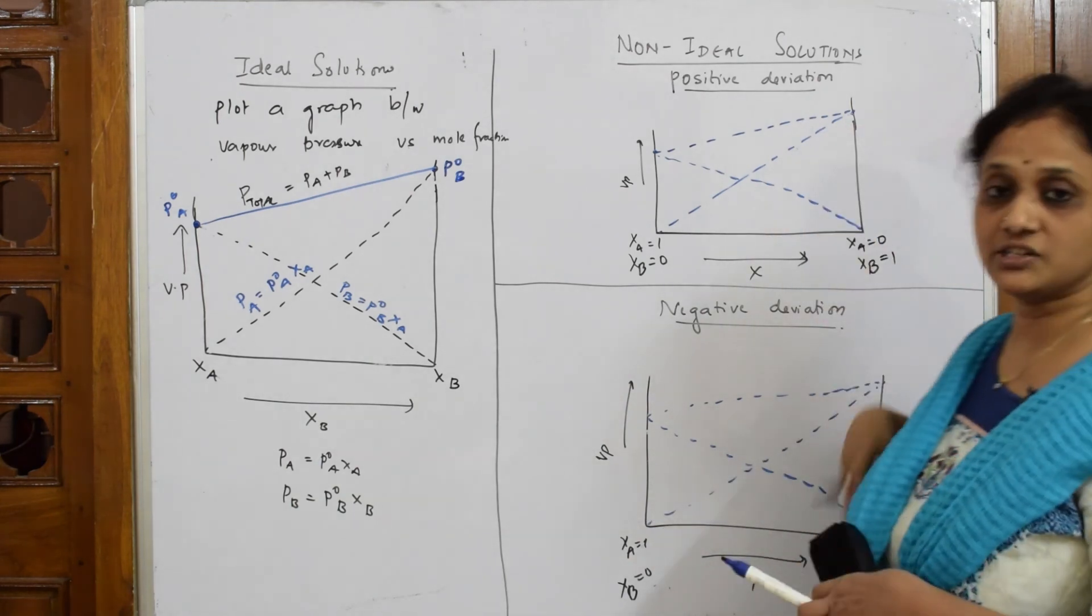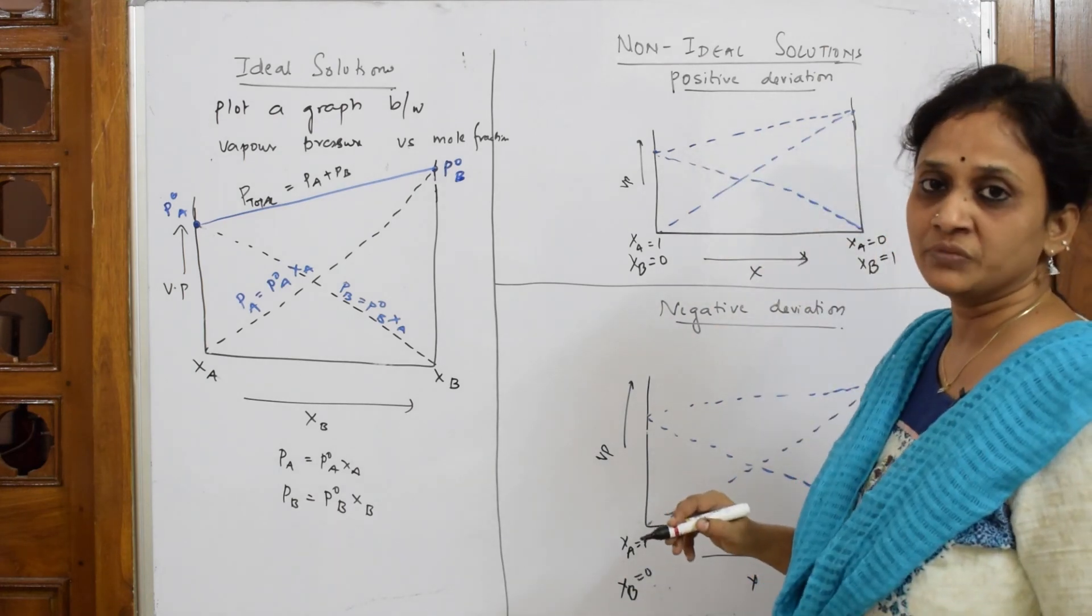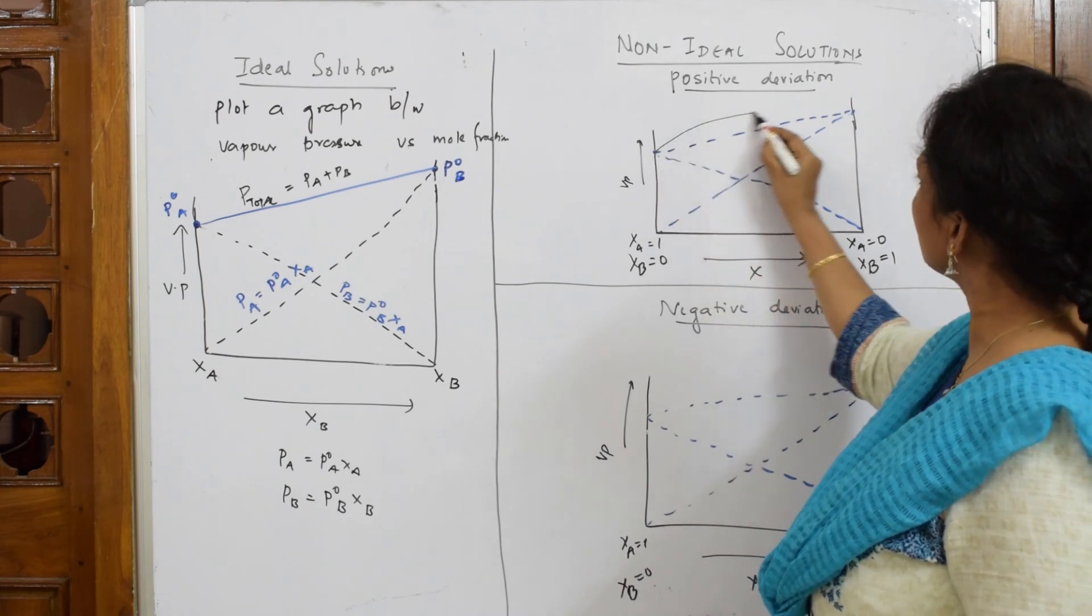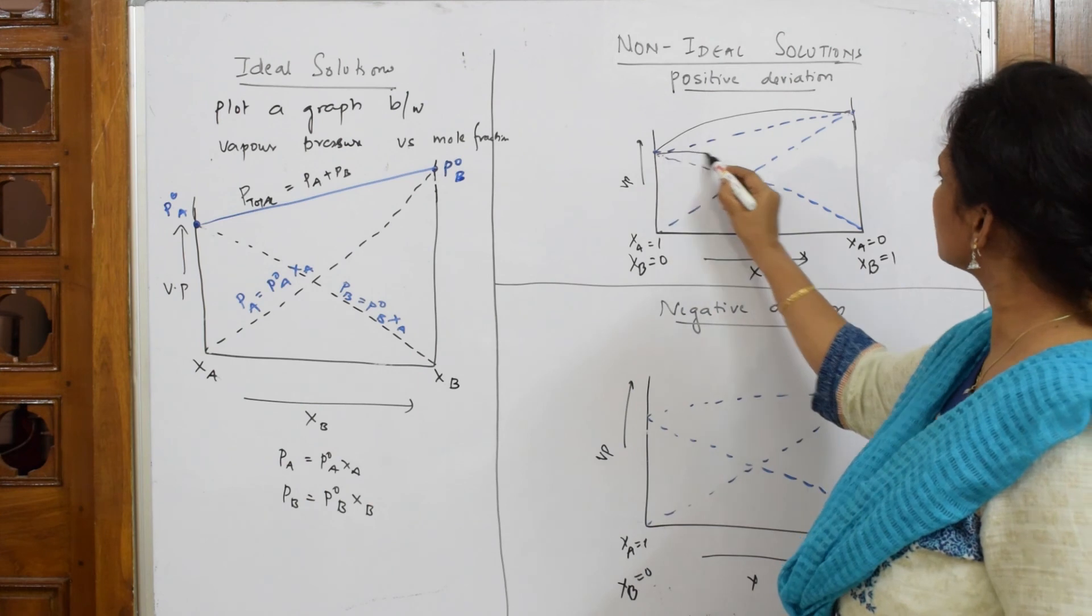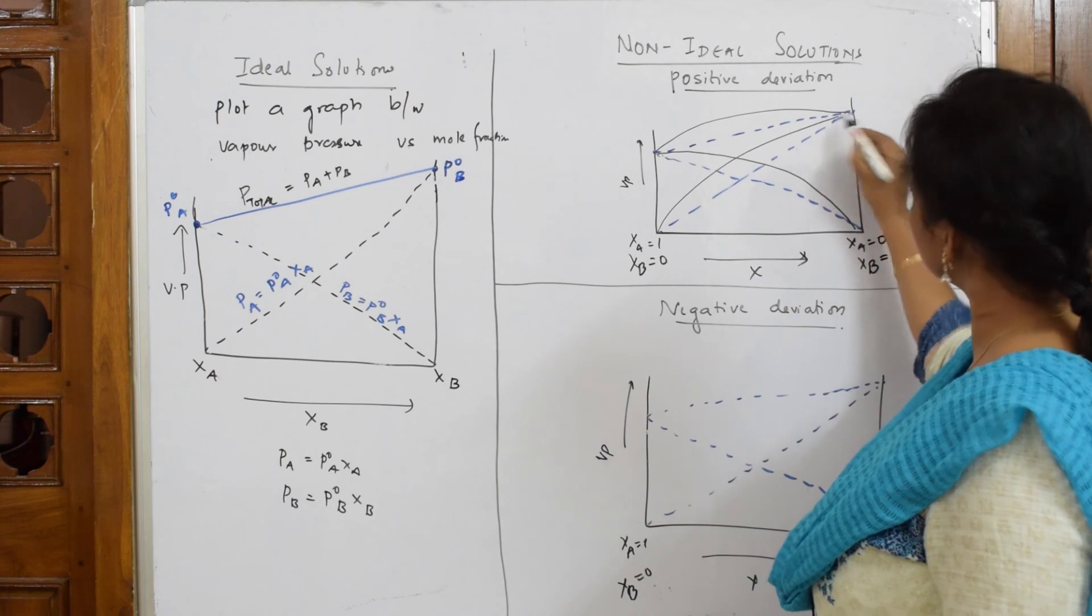Now, for positive deviation, I said the value will be above the ideal solution curve. So, this is your standard value. The value will be above. Now, this is your line. The values shown by this, by the solutions are above. Now, this is your line. The value shown by it is above.